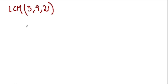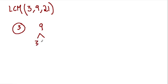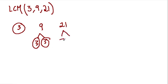My first strategy is for each number to think about what the prime factors are. So for 3, that is prime — so that's done. And 9 is just 3 times 3, so we're done with that. And 21 equals 7 times 3.